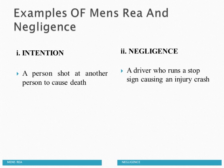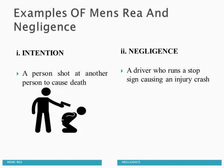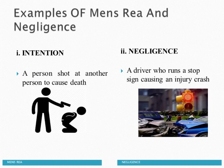Examples of mens rea and negligence: A person who shoots at another person to cause death is an example of having mens rea. A driver who runs a stop sign causing an injury crash is an example of negligence.